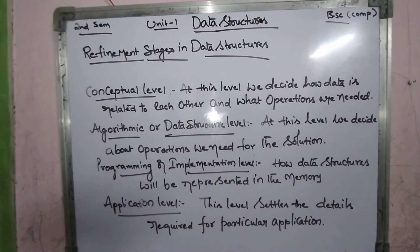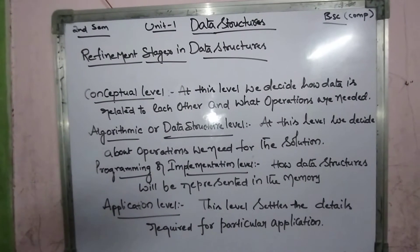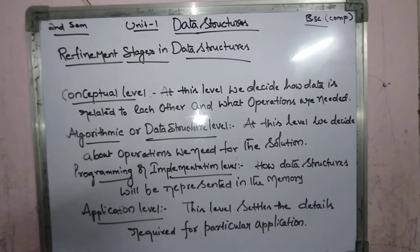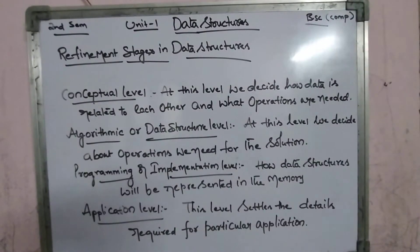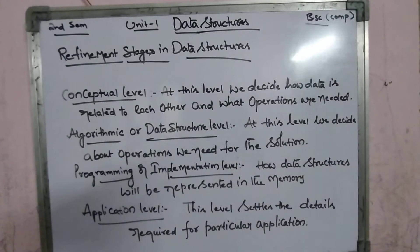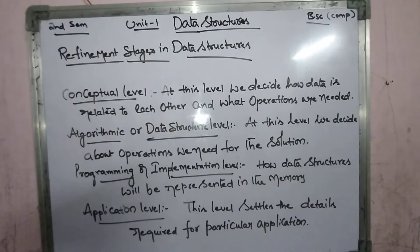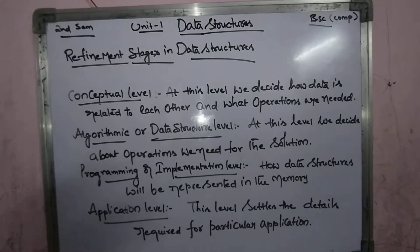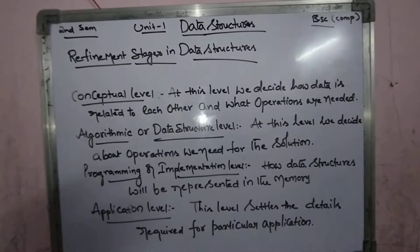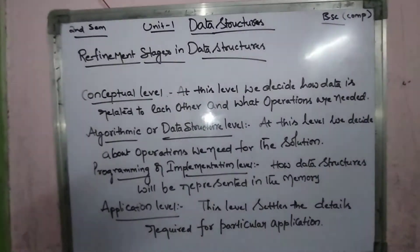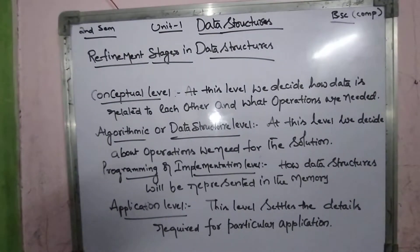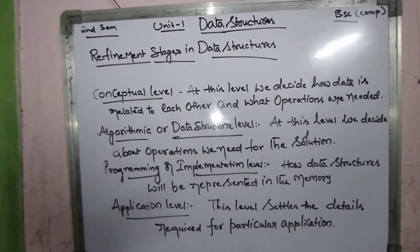In the first layer, we decide what operations we need, and after that we decide about the operations needed to get the solution. Next is the implementation, and after that the application. These are some of the refinements we use in our top down approach.